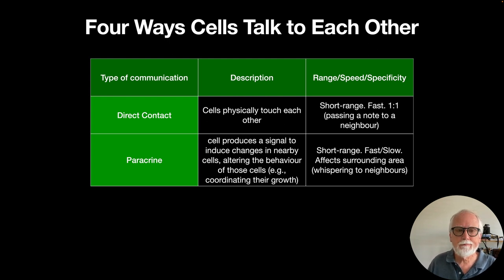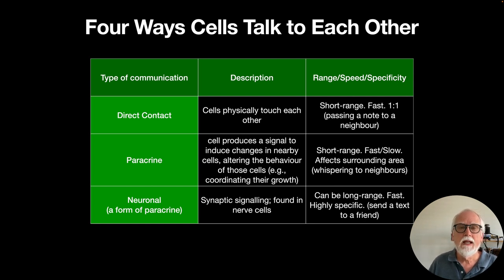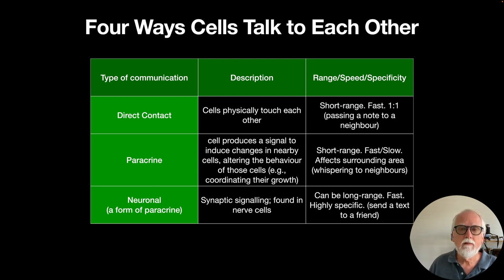A third way cells communicate is neuronal, which is really a form of paracrine communication. This is how nerve cells work — they use synaptic signaling where they signal from one cell to the next by inducing changes through neurotransmitters. This can be quite long range; axons can go up and down the spinal cord. It's fast — action potentials move quickly down the axon — and it's highly specific because neurotransmitters at the terminal buttons affect only nearby neurons with the right receptors. It's like sending a text to a friend.